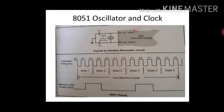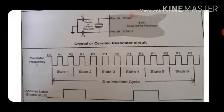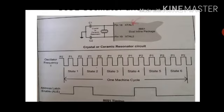Below this is address latch enable. Whenever the address latch is enabled high, it will be passing the address. Whenever it is low, it is passing the data. There are a total of six states in one machine cycle.